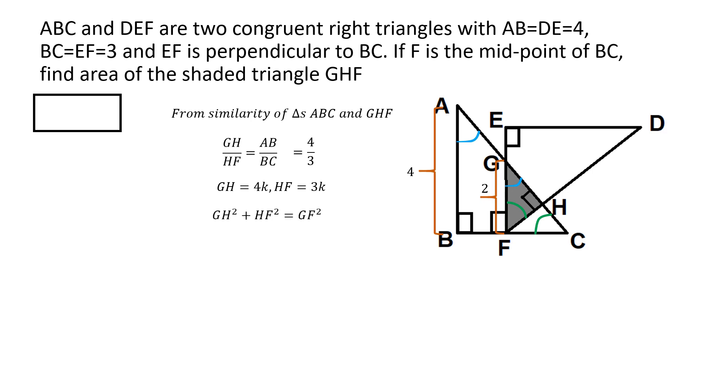And in right-angled triangle GHF, we have the GF being the hypotenuse. We can apply Pythagoras theorem and write GF square is equal to GH square plus HF square. So GH and HF are the two legs of the right-angled triangle. GF is a hypotenuse. So this is just Pythagoras theorem. And then we already know what GF is. GF is 2. And then we substitute GH equal to 4K and HF equal to 3K. And we get this, 4K whole square plus 3K whole square equal to 2 square.